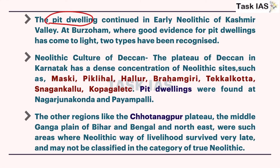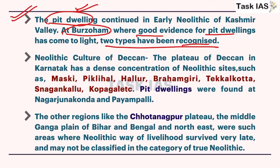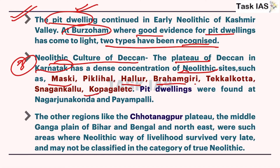Pit dwelling in Burjahom is very famous - even in NCERT this is given - where good evidence of pit dwelling has come to light, with two types specially recognized. In pit dwellings, pottery and other elements were also found in association with burials. Neolithic culture of Deccan - this is the third area. The plateau of Deccan in Karnataka has a dense concentration of Neolithic sites such as Maski, Hallur, Brahmagiri, and Kupgal. Pit dwellings were found in Nagarjunakonda and Paiyampalli.